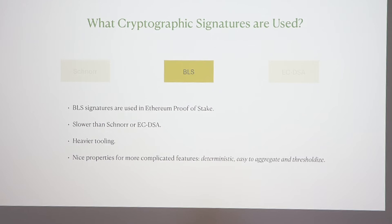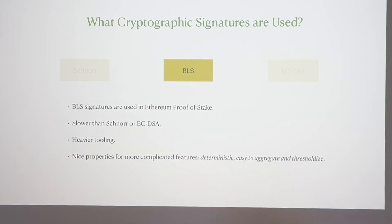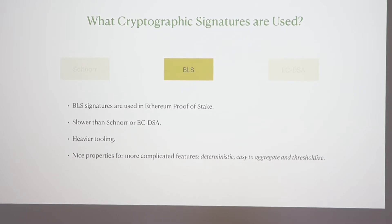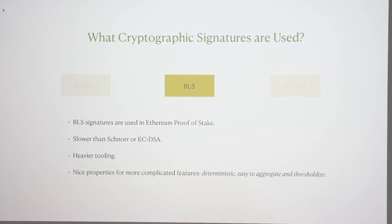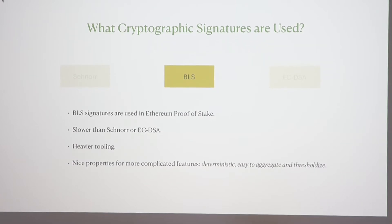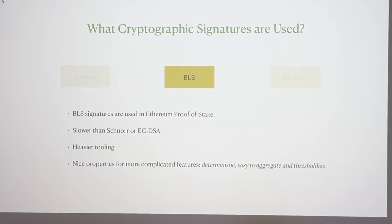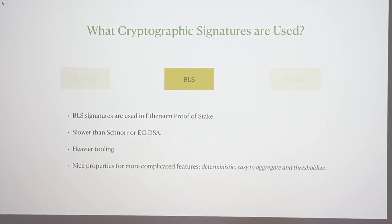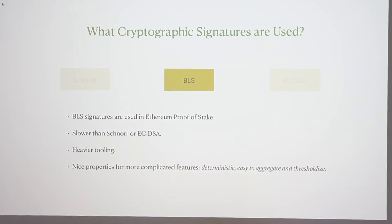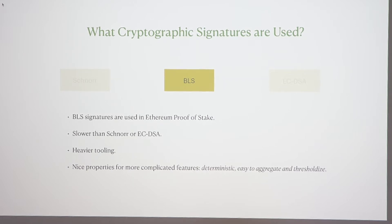The third important scheme is BLS signatures, used in Ethereum proof of stake if you want to be a validator. They're slower than Schnorr or ECDSA and require heavier tooling — in particular they require pairings — but they have some very nice properties. They are deterministic, so given a message you always produce the same signature. They're very easy to aggregate, which is why they're used in proof of stake to compress network information, and they're also very easy to thresholdize.